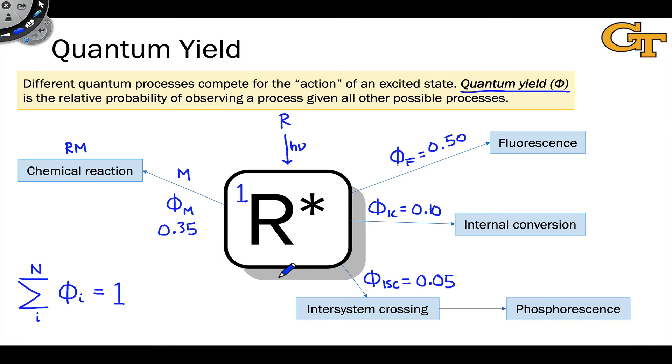Quantum yield is also related to rate in a practical sense. Because to generate R star, I have to absorb a photon. So if I have some rate of photons impinging on my reaction, some rate of absorption, then the rate of a particular process, say the chemical reaction, is limited by this number. This number times the rate of absorption of photons by R gives me the rate of the chemical reaction essentially occurring.